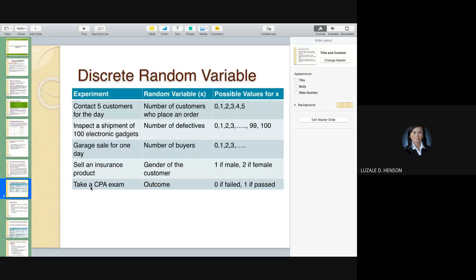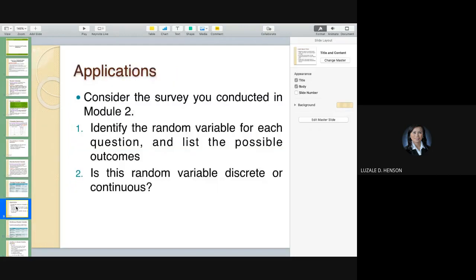Or, finally, take a CPA exam and then the outcome may be zero if you fail and one if you pass. So, these are just among the experiments under discrete random variable. You should be able to recognize it when it is discrete and when it is continuous. So, applications, you may also reflect on the survey that you conducted in module two. And from the seven questions that you constructed, identify the random variable for each question and list the possible outcomes. Just so you get the feel of how to apply this concept. Is this random variable discrete or continuous?